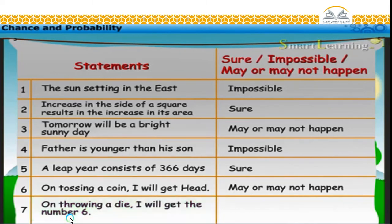On throwing a die, I will get number six. A die has six faces, that is, numbers one to six. Hence, this may or may not happen.